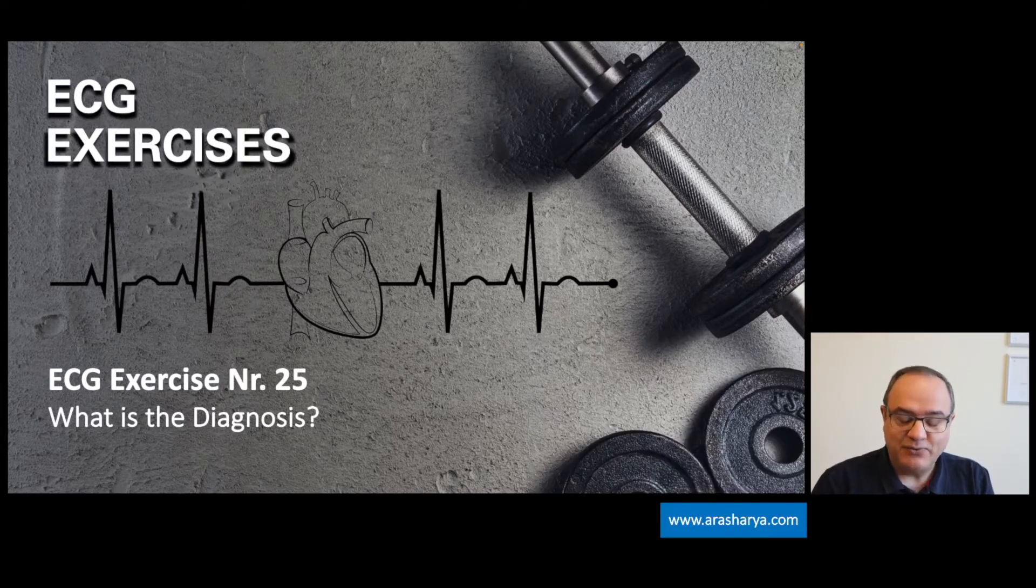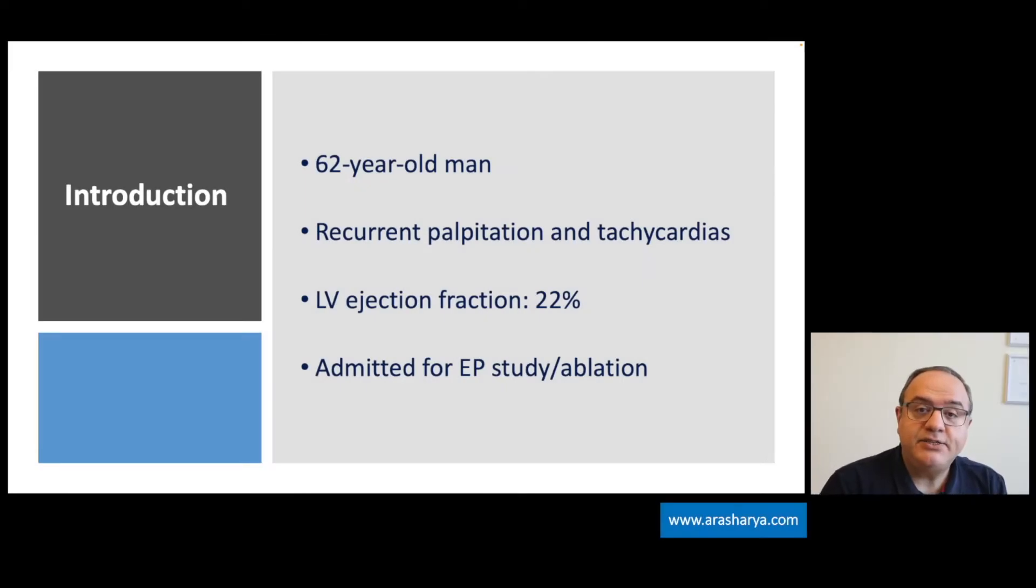Today's ECG belongs to a 62-year-old man who was admitted to the hospital because of recurrent palpitations and tachycardia. In past medical history, he experienced old inferior wall myocardial infarction. Echocardiography showed an ejection fraction of 22 percent. The patient then was referred for EPS study and VT ablation to our center.